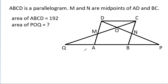In this video, we have given that ABCD is a parallelogram and M and N are midpoints of AD and BC, and the area of ABCD is 192. We have to find the area of triangle POQ.